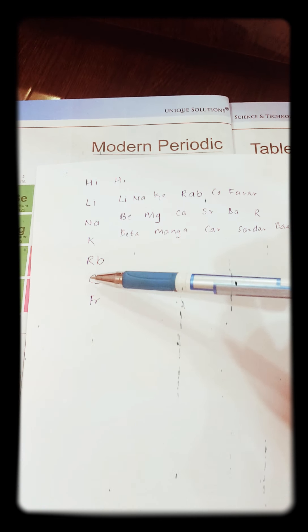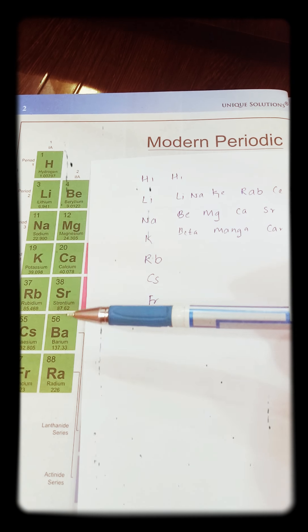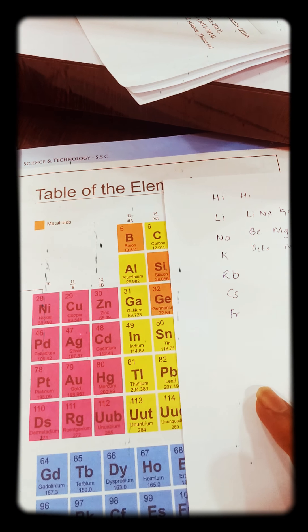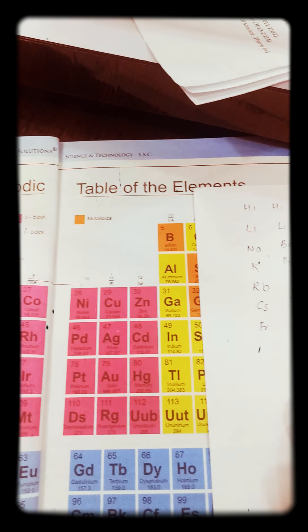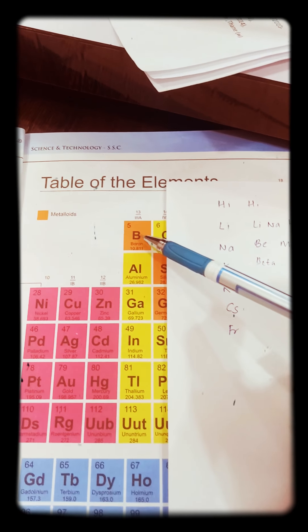Hai, Li, Na, Ke, Rab, Se, Farad. Beta, Mangakar, Sardar, Bap, Razi. Let us go with the next group and that is 3rd A group or 13th A group. It's very easy: Bal Gangadhar Indian Tilak or Bal Gaya Insan Takla.